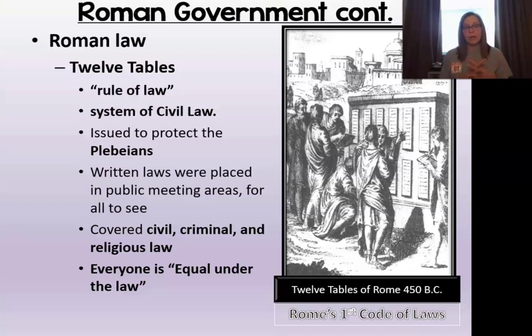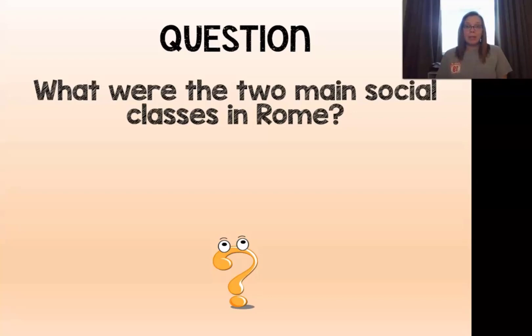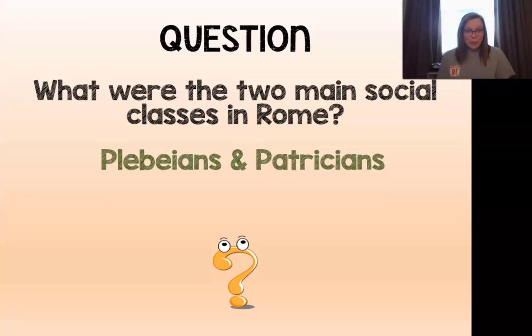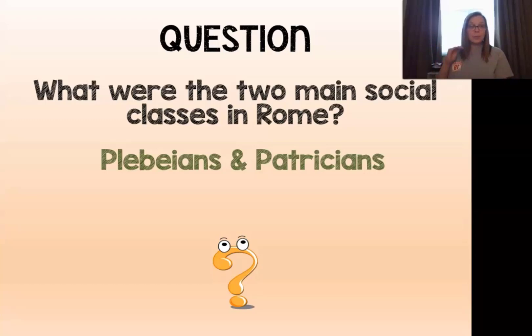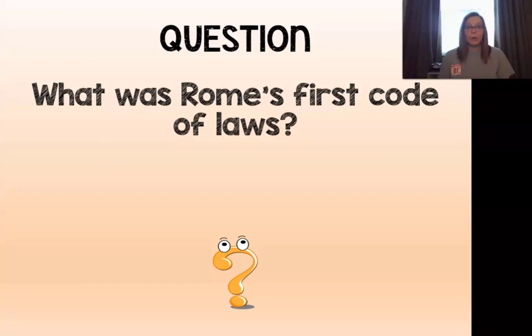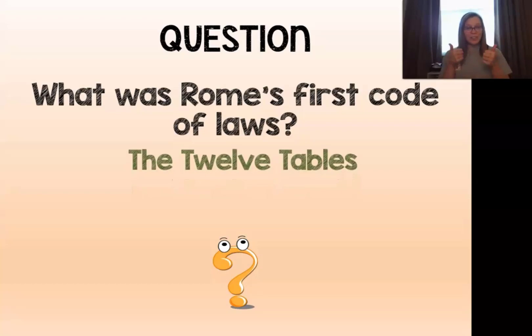Let's review for a second. What were the two main social classes in Rome? If you said plebeians and patricians, you were correct. The patricians were the higher class and the plebeians were the lower class. And what was the name of Rome's first code of laws? If you said the 12 Tables, you're correct.